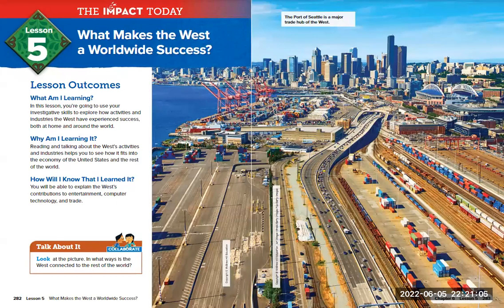Hello fourth graders, today you're going to be reading about chapter six, lesson five: What Makes the West a Worldwide Success. You're going to be learning about how activities and industries in the west have caused success here in the west as well as around the world, and how it affects the economy of the United States.